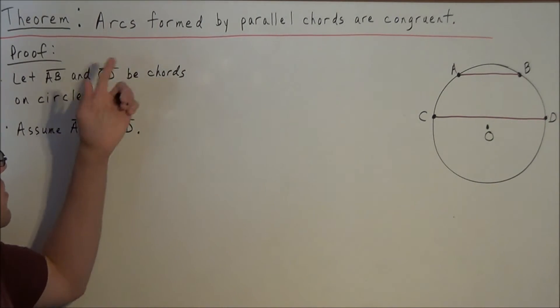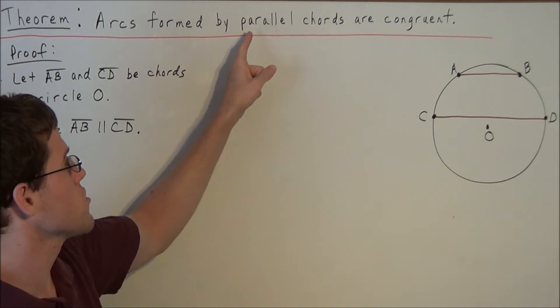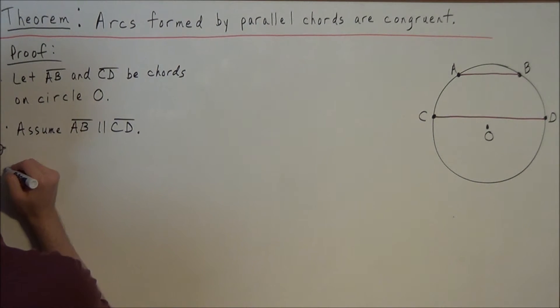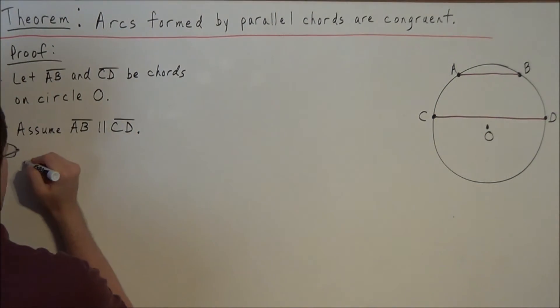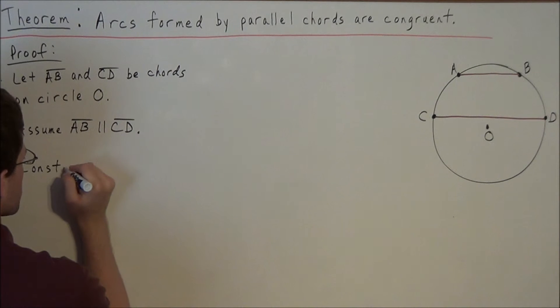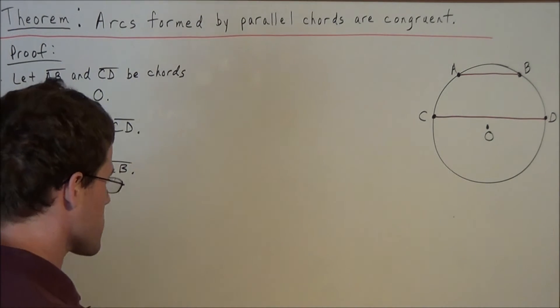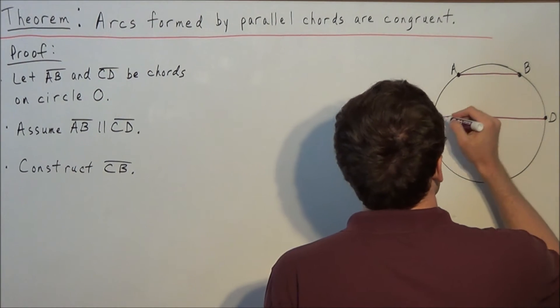And we could assume this because the theorem states arcs formed by parallel chords are congruent. So we could assume that the chords are parallel. But now what does this allow us to say? Well, the next thing we want to do is construct line segment CB. And now when we draw this in on our diagram, we'll see the purpose of constructing this line segment.